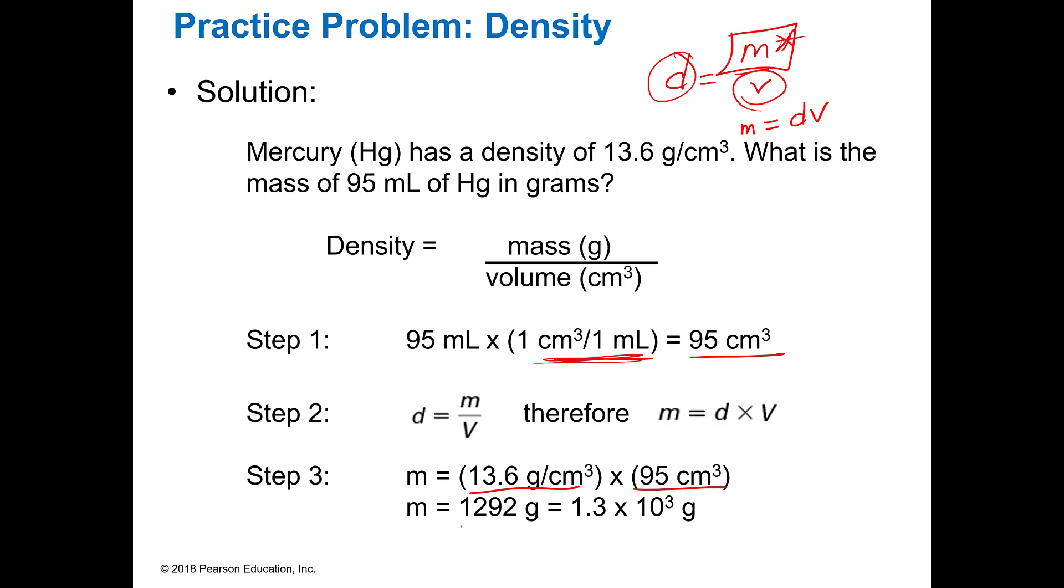So d times v, which is 13.6 times 95, gives you 1292. Remember we always have to do our significant figures, so we got two significant figures and three, and since we're multiplying we're going to have two in our answer, so our answer comes out to 1.3 times 10 to the third.